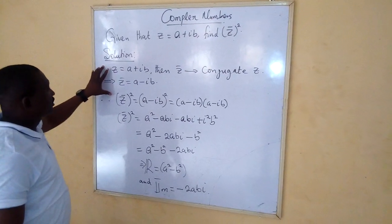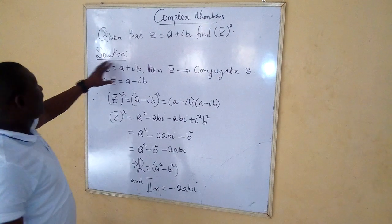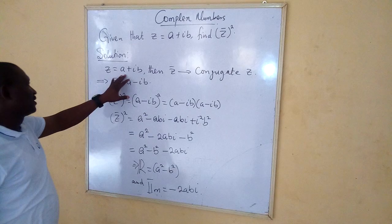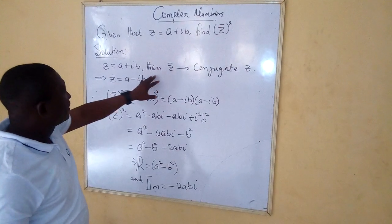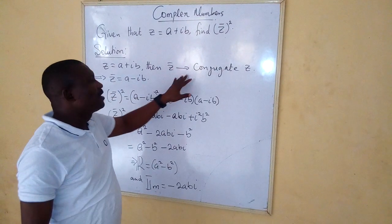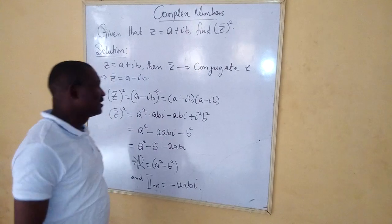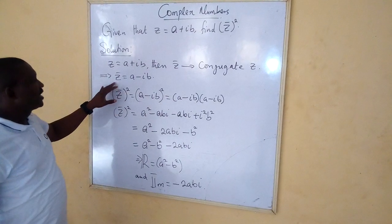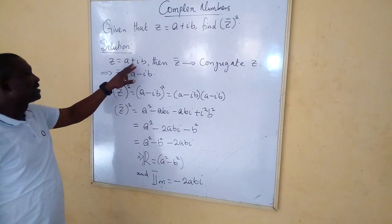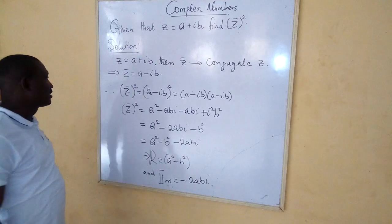And the solution is thus obtained. Our z has been defined as a plus ib. Then z-bar implies the conjugate of z. And the conjugate of z implies changing the sign between the real and the imaginary part.